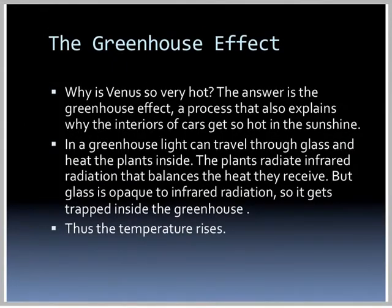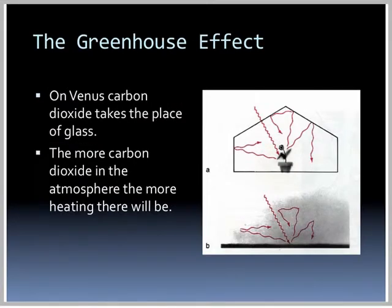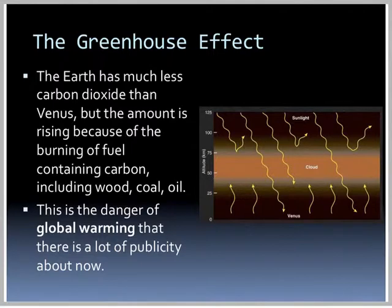Why is Venus so hot? The answer is the greenhouse effect. In a greenhouse, light travels through the glass and heats the plants inside; as the plants radiate infrared radiation, the glass traps it since glass is opaque to infrared, so temperature rises. On Venus, the carbon dioxide atmosphere acts as the glass — visible light goes through the atmosphere, heats the surface, but infrared trying to escape bounces back down. The more carbon dioxide, the more heating. Earth has much less CO2 than Venus, but the amount is rising due to burning of carbon-containing fuels like wood, coal, or oil — this is the danger of global warming.